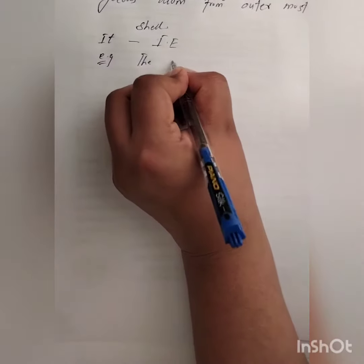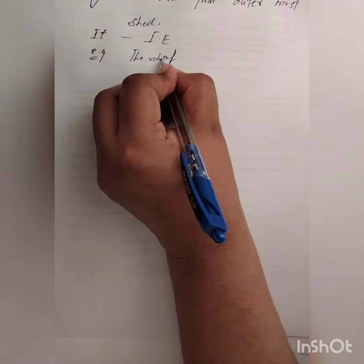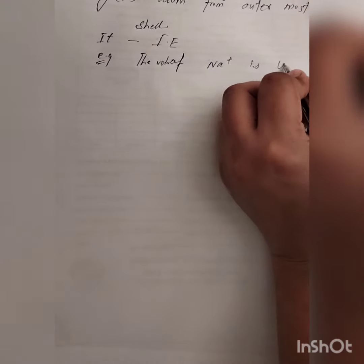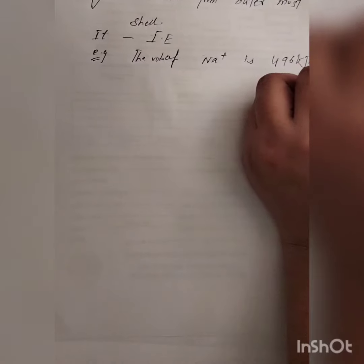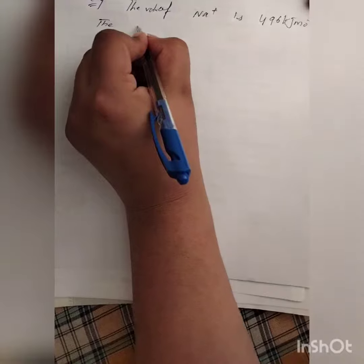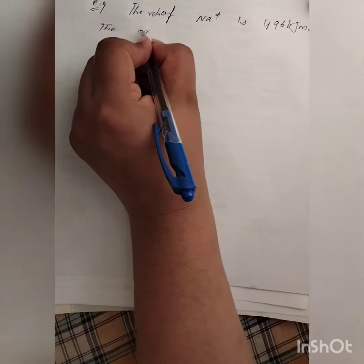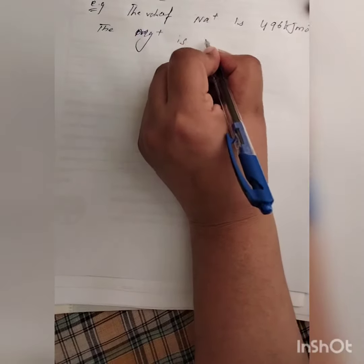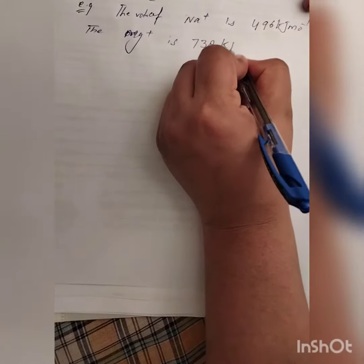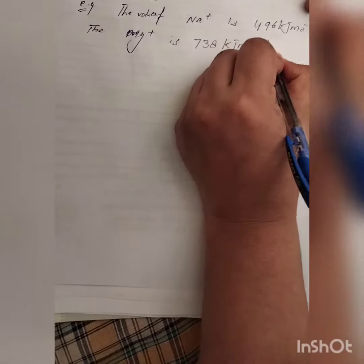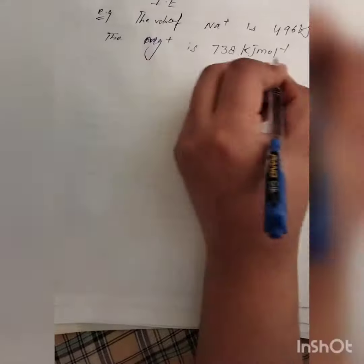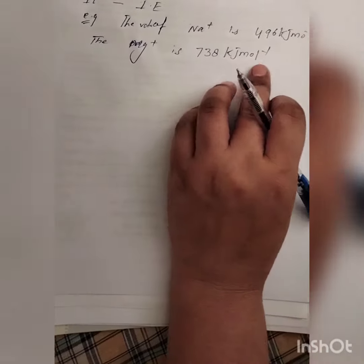For example, the ionization energy of sodium is 496 kJ per mole. The first ionization energy of magnesium is 738 kJ per mole.